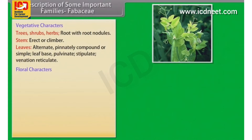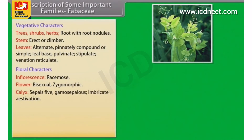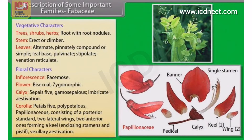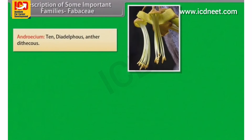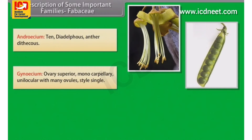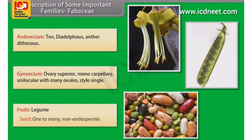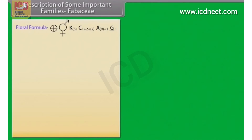Floral characters of Fabaceae: Inflorescence is a raceme. Flowers are bisexual and zygomorphic. Calyx has 5 gamosepalous sepals with imbricate aestivation. Corolla has 5 polypetalous, papilionaceous petals consisting of a posterior standard, two lateral wings, and two anterior ones forming a keel enclosing stamens and pistil; vexillary aestivation. Androecium has 10 diadelphous stamens, anthers dithecous. Gynoecium has a superior, monocarpellary, unilocular ovary with many ovules and a single style. Fruit is a legume. Seeds are one to many, non-endospermic.